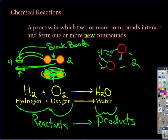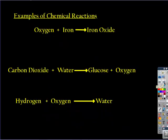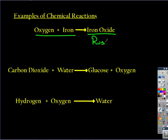Here are a couple more examples of chemical reactions. Oxygen reacting with iron — you can think of a nail or an iron fence — reacts to form a brand new compound called iron oxide. You probably know that better as rust. So this represents the rusting of iron in the presence of oxygen.